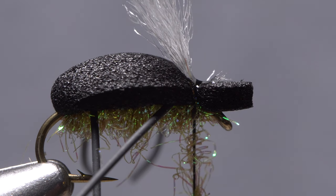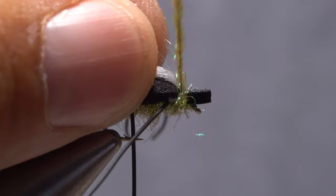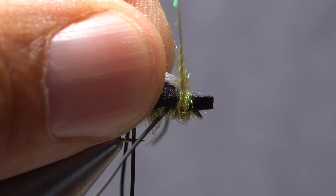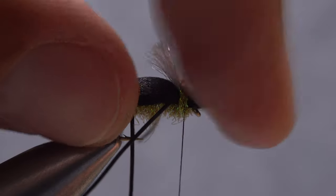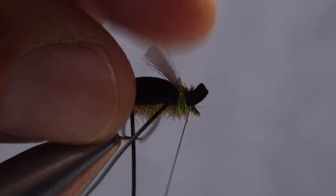Reach for your head cement or here Sally Hansen hard as nails and apply a small drop to the exposed thread wraps on top of the fly. Wrap over the thread and wing base with a dubbing noodle to cover them up. You should end with bare tying thread immediately behind the hook eye.